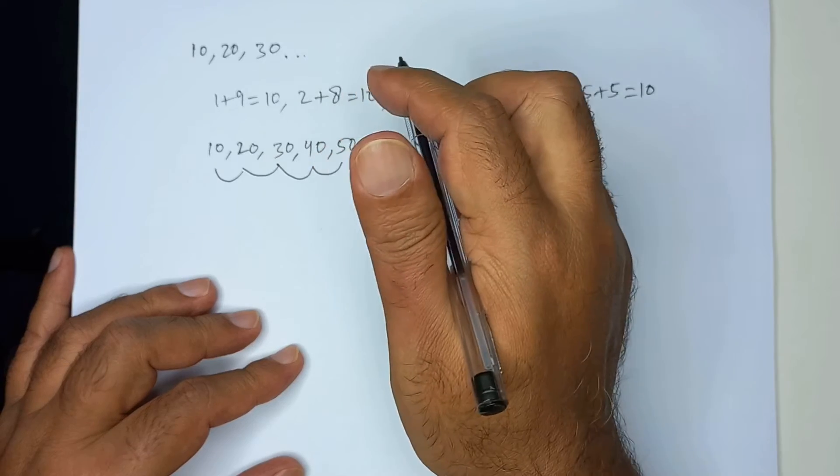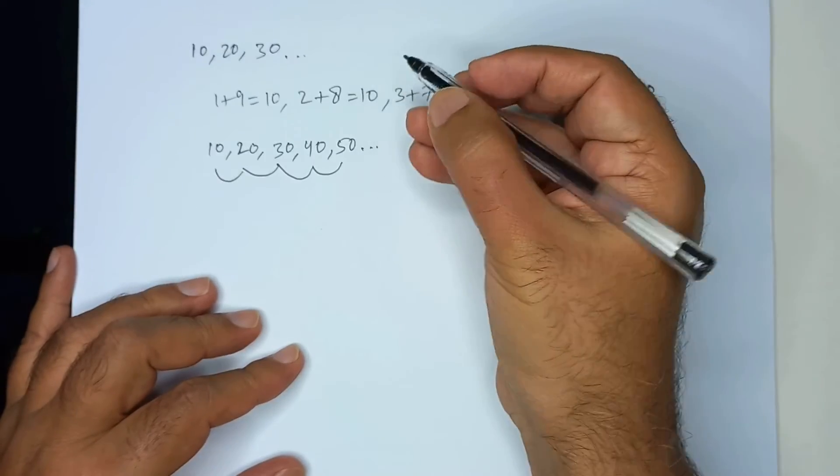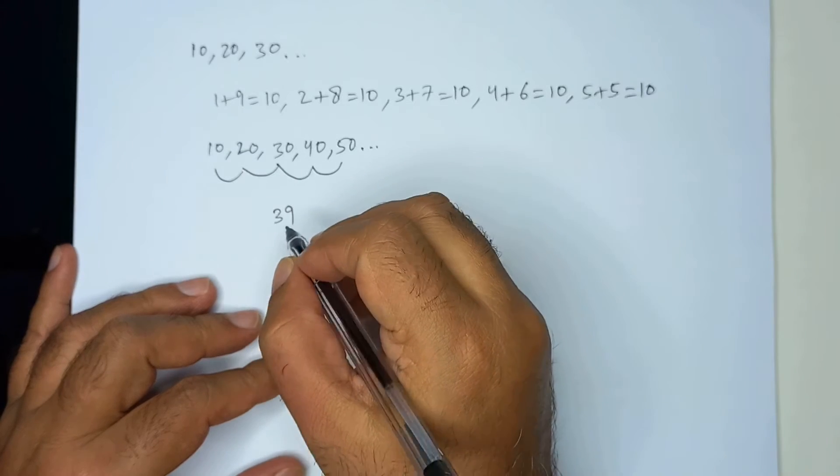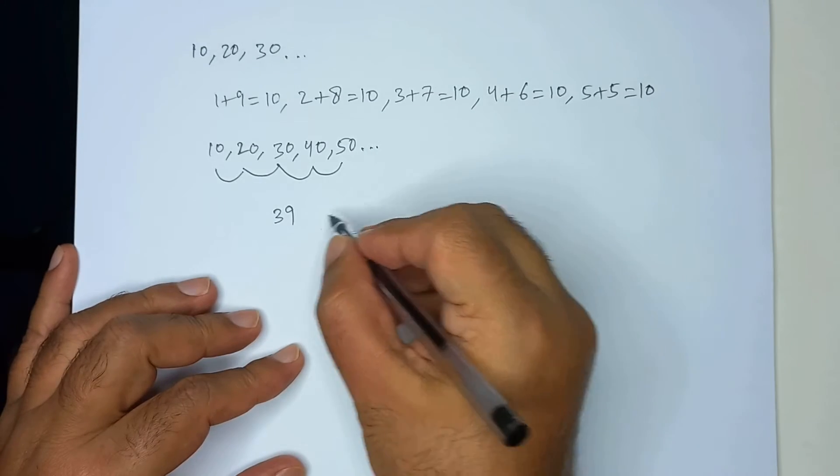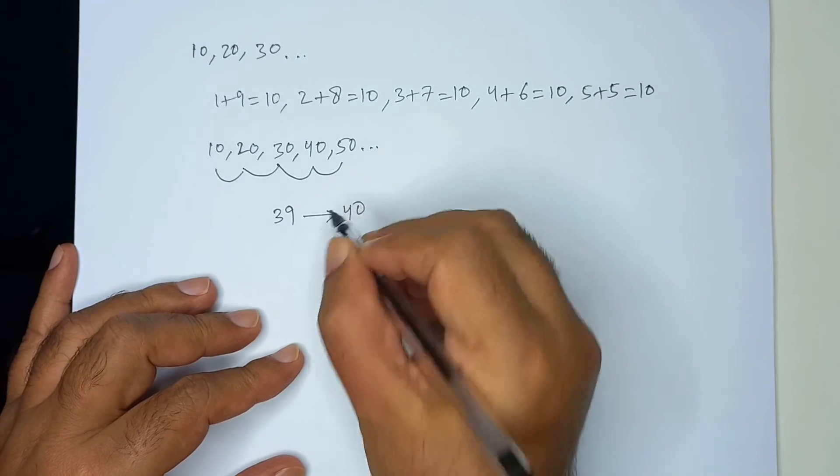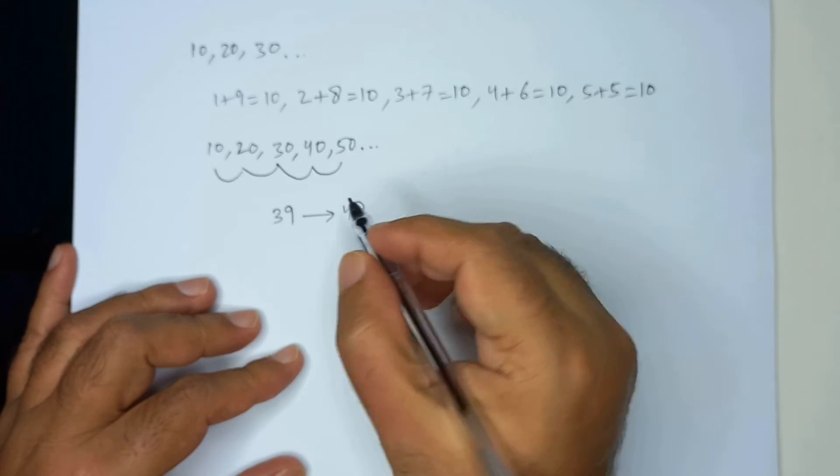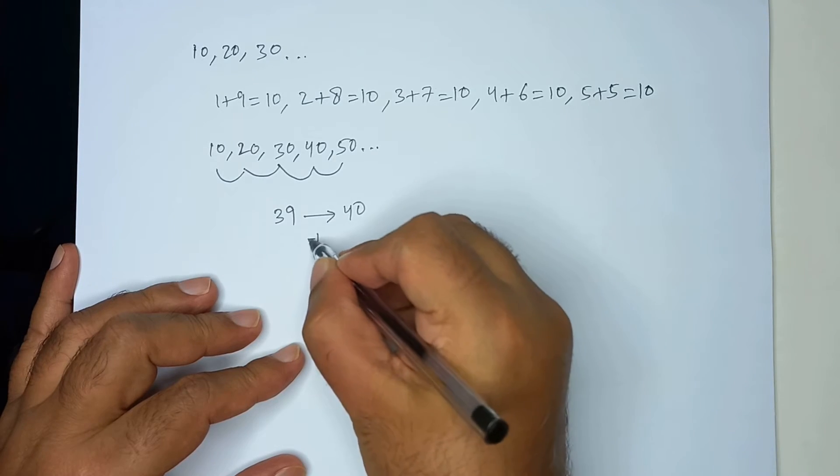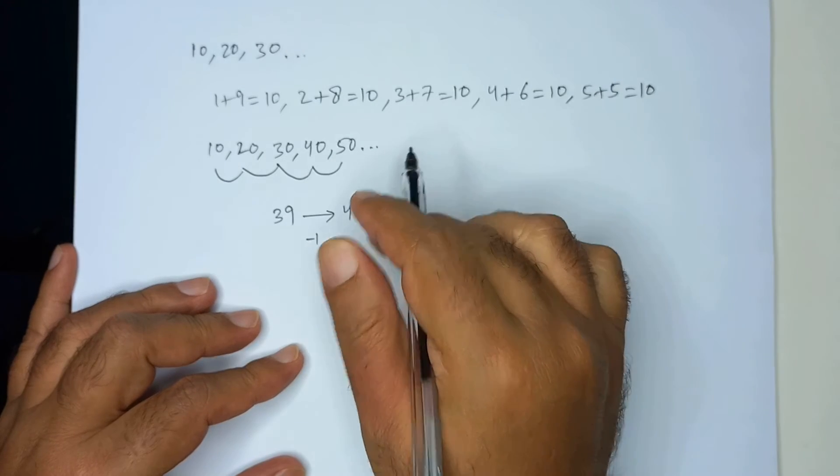How they are useful? Let's think of a number, let's say 39. You can see that 39 is close to 40 and 40 is a multiple of 10. This 39 is close to 40 and is one less, one less than 40.